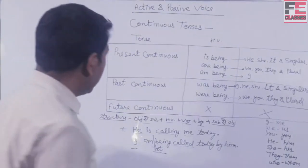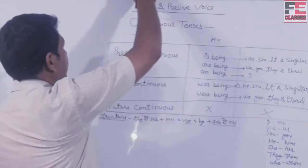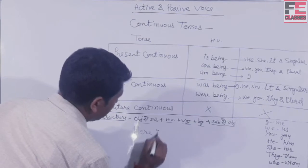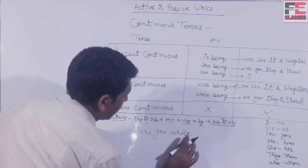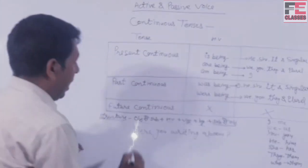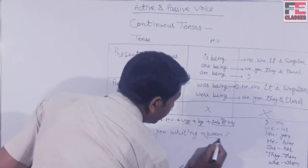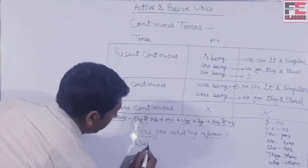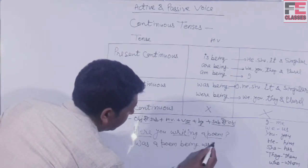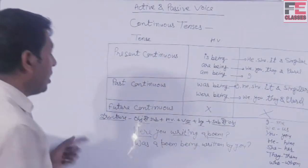Interrogative first type का example: 'Were you writing a poem?' Passive बनाने पर: 'A poem' new subject बनेगा — singular है, तो helping verb 'was' आएगी। Passive: 'Was a poem being written by you?' Helping verb शुरू में आएगी, क्योंकि interrogative sentence है। You का you ही रहता है।